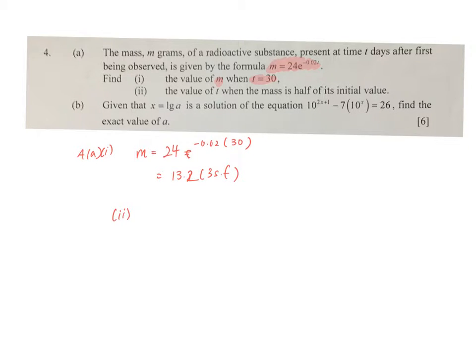Find the value of t when the mass is half of its initial value. So of course, the initial value, what does it mean? To understand, you know, that the initial value just means that at the initial value, the time has not started. So the time is equal to 0.